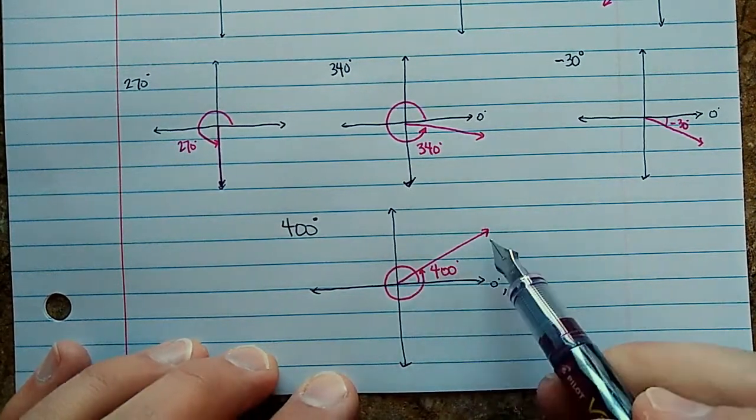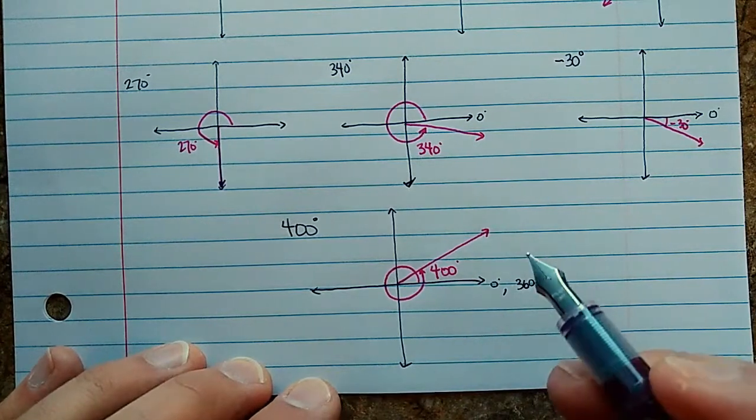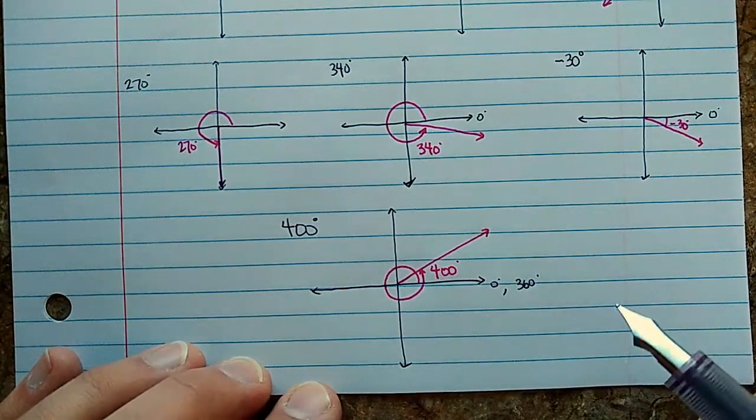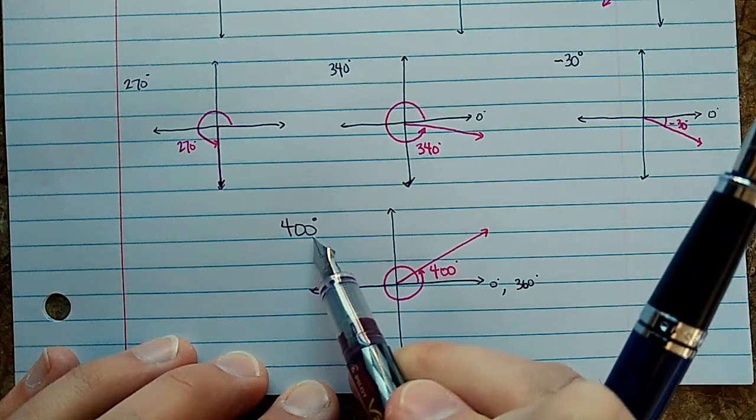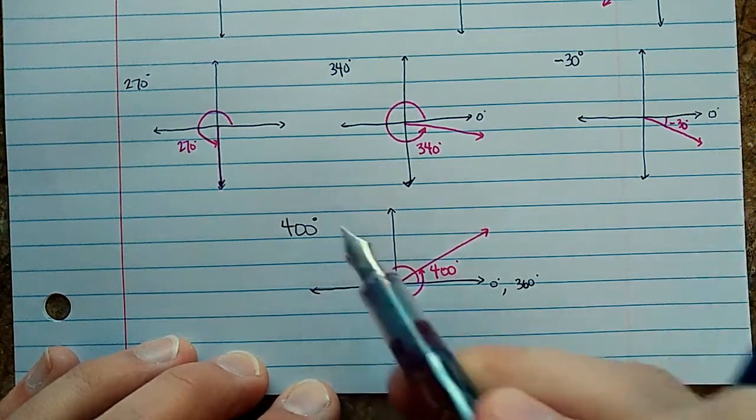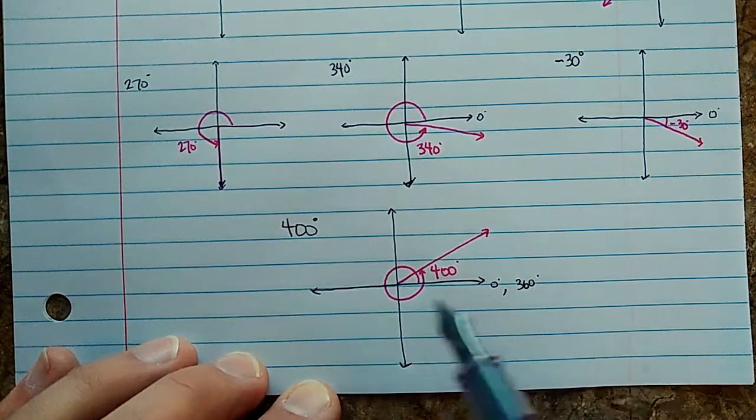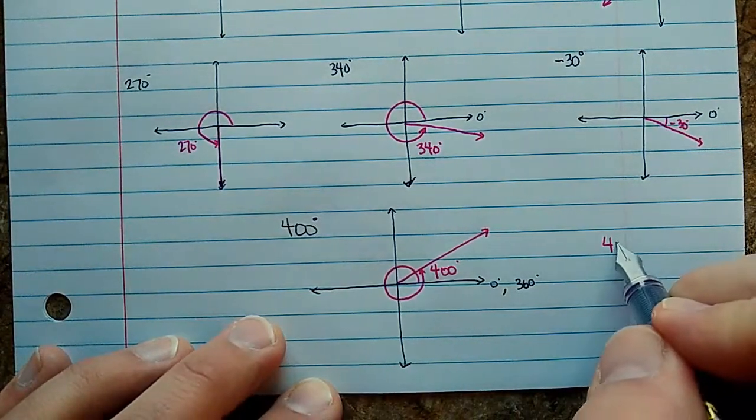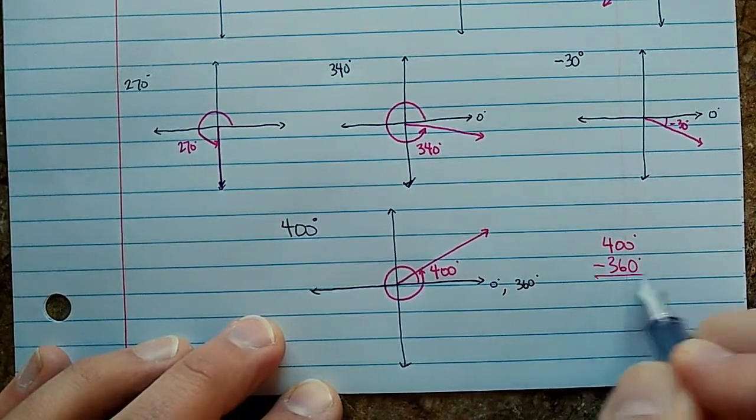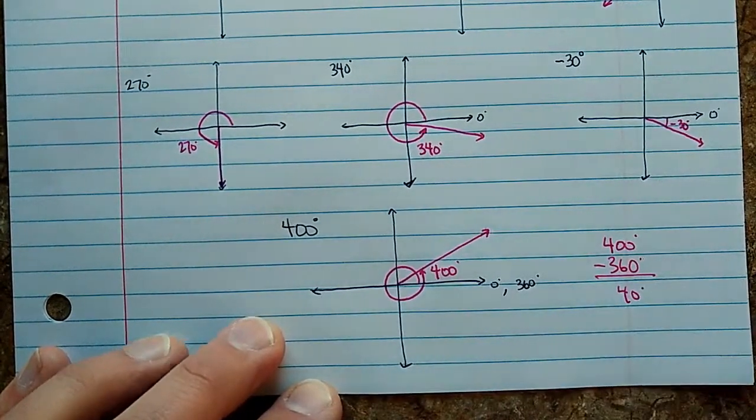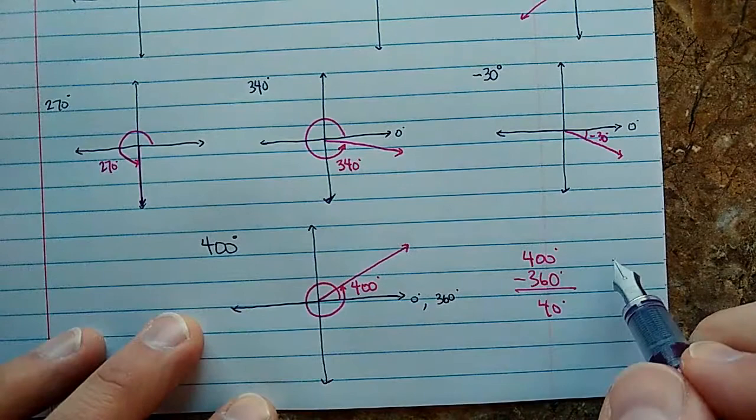So the terminal arm for 400 degrees is the same as the terminal arm for 40 degrees. And you can get that if you have a number that's over 360 or 360 or more. You can subtract 360 from it repeatedly until you get to something that is less than 360. In our case, 40 degrees. This even works with very big angles. For example.